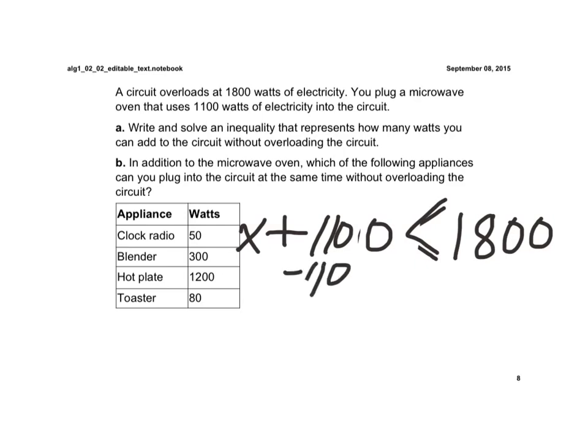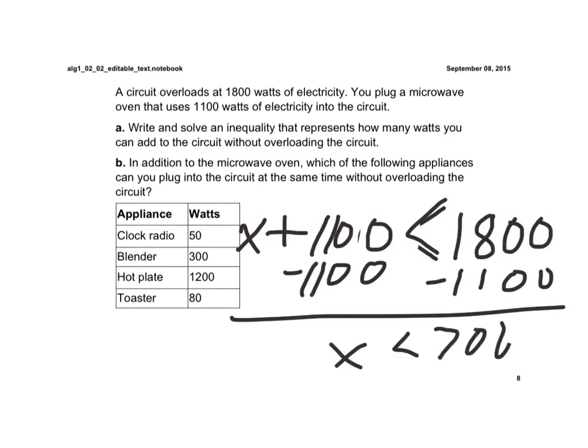If we solve this, we would subtract the 1,100 from each side, and we get X is less than 700 watts.